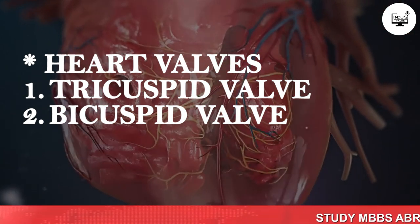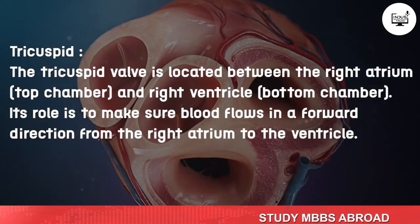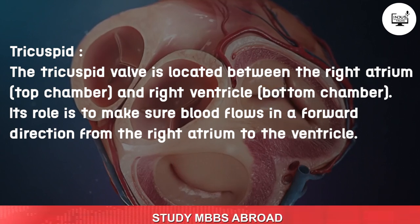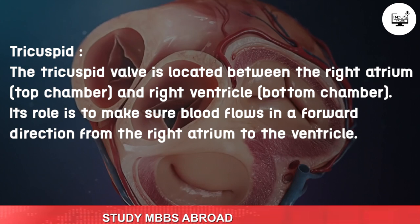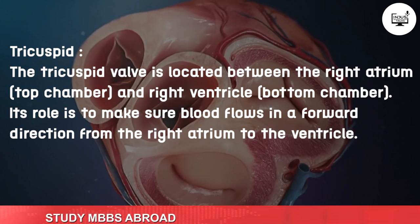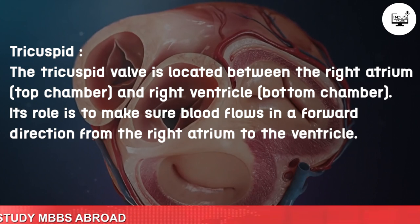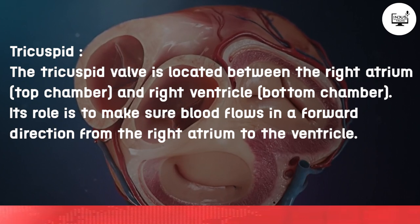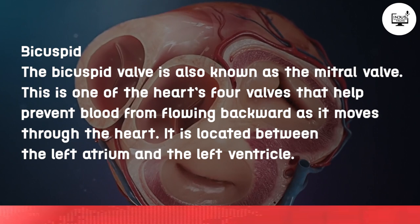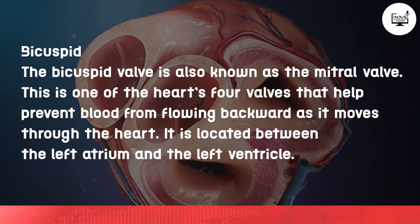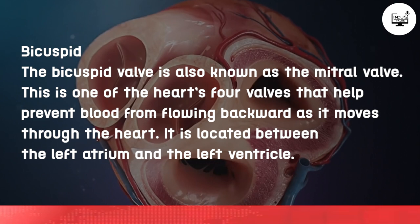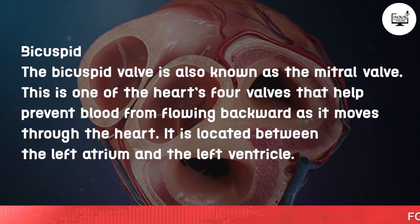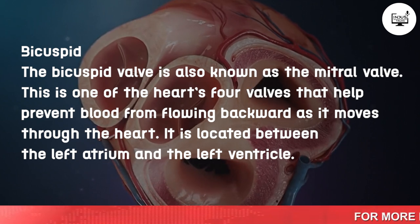The tricuspid valve is located between the right atrium and right ventricle. The bicuspid valve is located between the left atrium and left ventricle. There is also the aortic valve and the pulmonary valve. These are the main valves of the heart.